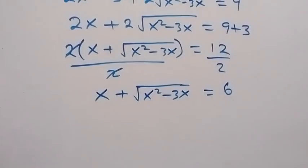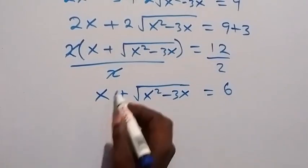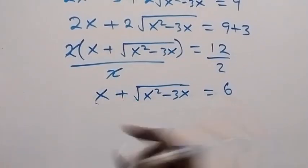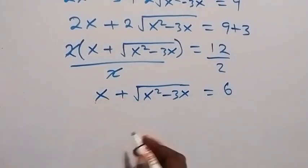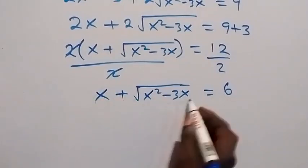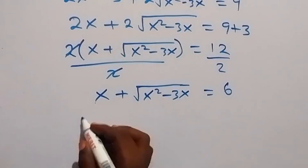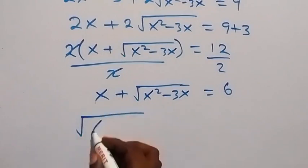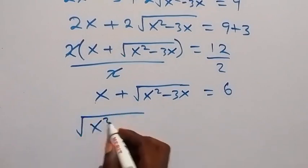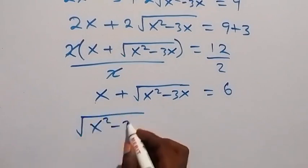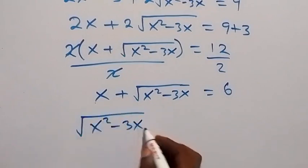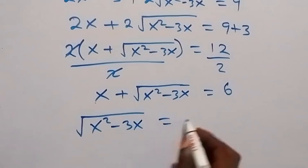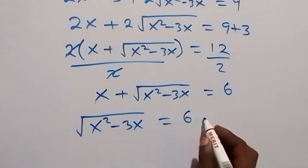Now let's take x to the other side. We are left with root of x squared minus 3x equals 6 minus x.